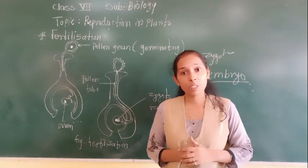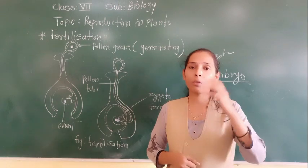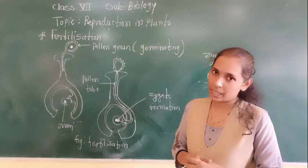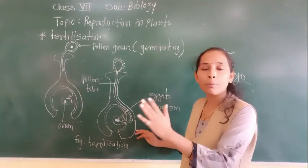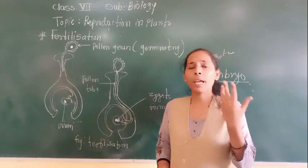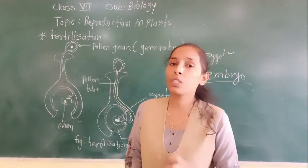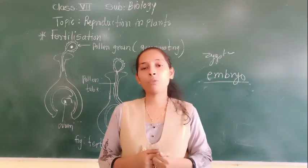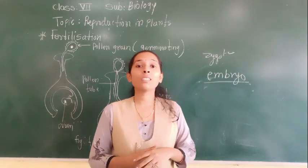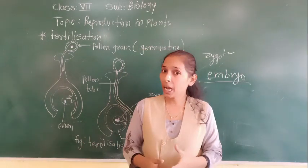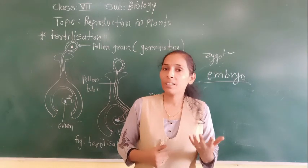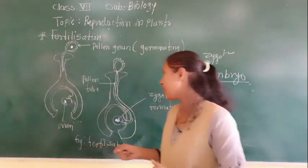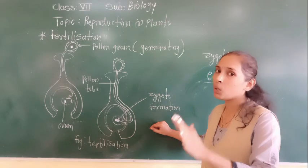The embryo, when placed in soil through germination, starts to grow, and in this way we can produce a new plant from the seed. This is all about sexual reproduction in a plant. There are certain fruits which are very fleshy and juicy — for example, mango and apple — and on the other hand, certain fruits are very hard, like walnuts and almonds.